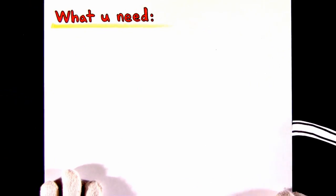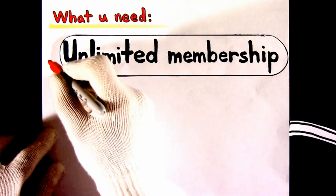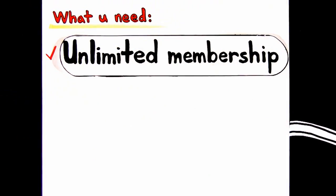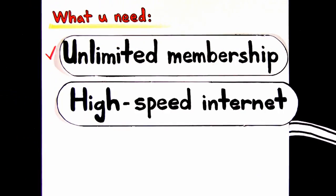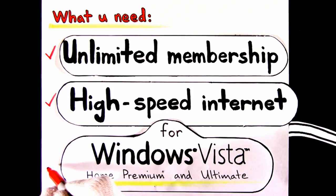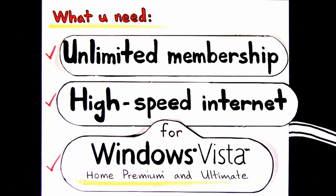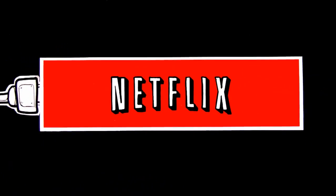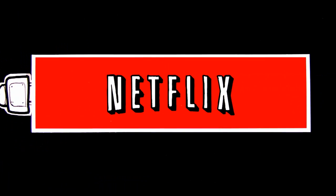All you need is an unlimited membership with Netflix, a high-speed internet connection, and a Windows Vista Home Premium or Ultimate-based PC, and you're plugged in to the massive collection of movies and TV episodes available from Netflix. You can get it all by going to the Netflix tile in the TV and Movies section of Windows Media Center.